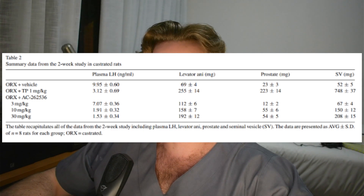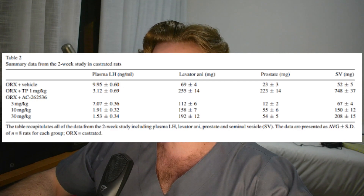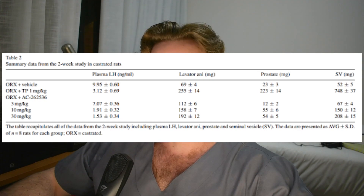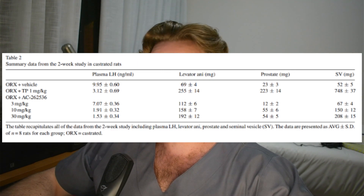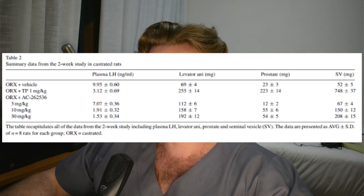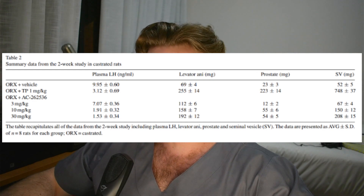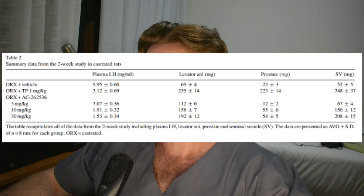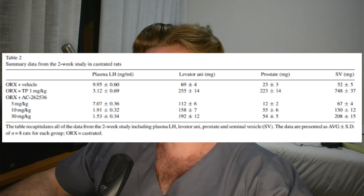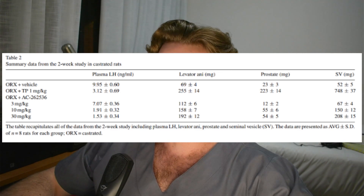Unfortunately, this is pretty much the only data we have. There is one other trial, but we don't have any human trials, so we have to extrapolate. Extrapolating these results would suggest a dose of 30 mg/kg/day is only 66% as anabolic as testosterone propionate at 1 mg/kg/day, yet more suppressive, as seen in the LH results. Its redeeming factor is that it did not stimulate prostate growth as much as testosterone propionate. To convert these dosages to humans, you would use a conversion factor of about five to six — making the highest tested AC262 dose approximately five to six mg/kg/day in humans.